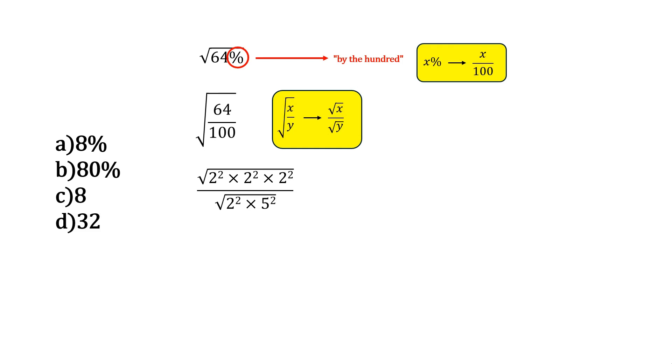Now we could tidy this up a little bit where if we had the square root of the product of two variables, it's the same as saying the square root of the one variable multiplied by the square root of the other. So we could say that it's square root of 2 squared times square root of 2 squared times square root of 2 squared over square root of 2 squared times square root of 5 squared. And then lastly, just to clean this up, the square root of any square number is merely itself. So in other words, the square root of 2 squared, which would be the square root of 4, is 2. So we can just do this for all of them.